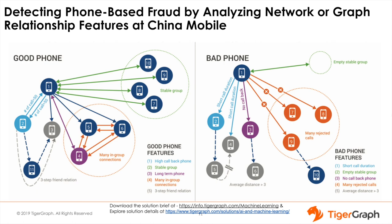Our seventh capability is extracting graph-based features for training machine learning models. We reviewed this example in an earlier module, covering generation of graph-based features to feed machine learning and improve accuracy for detecting phone-based fraud. A native parallel graph is used to generate machine learning features for multiple use cases in addition to fraud detection, such as money laundering, recommendation engines, and credit risk assessment and monitoring.